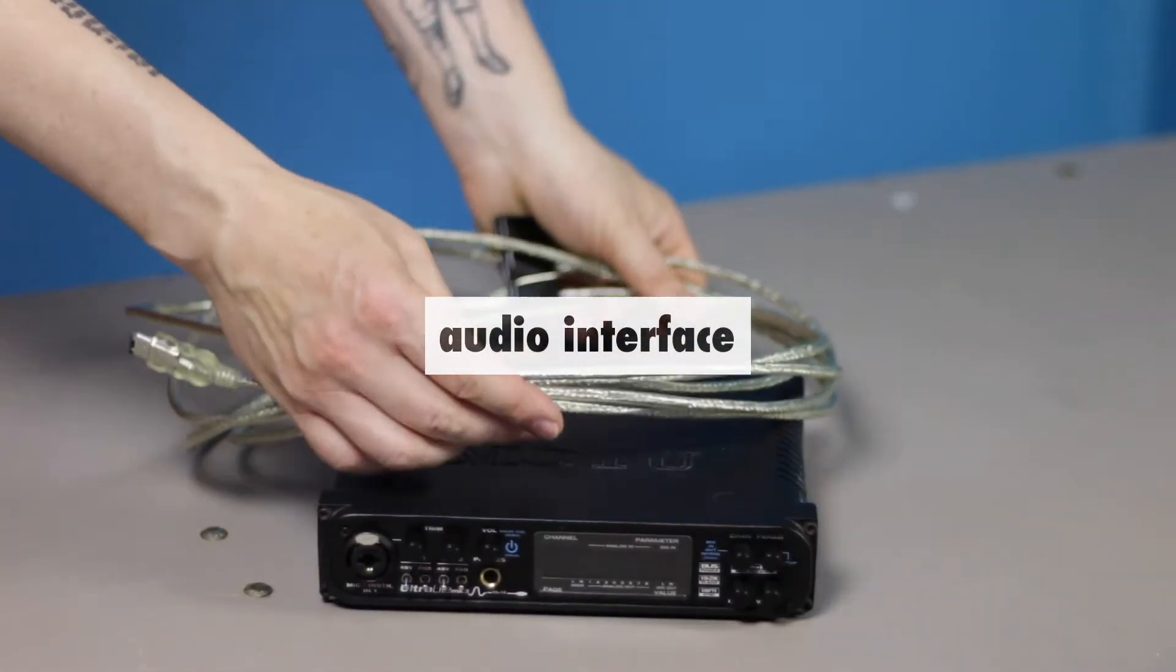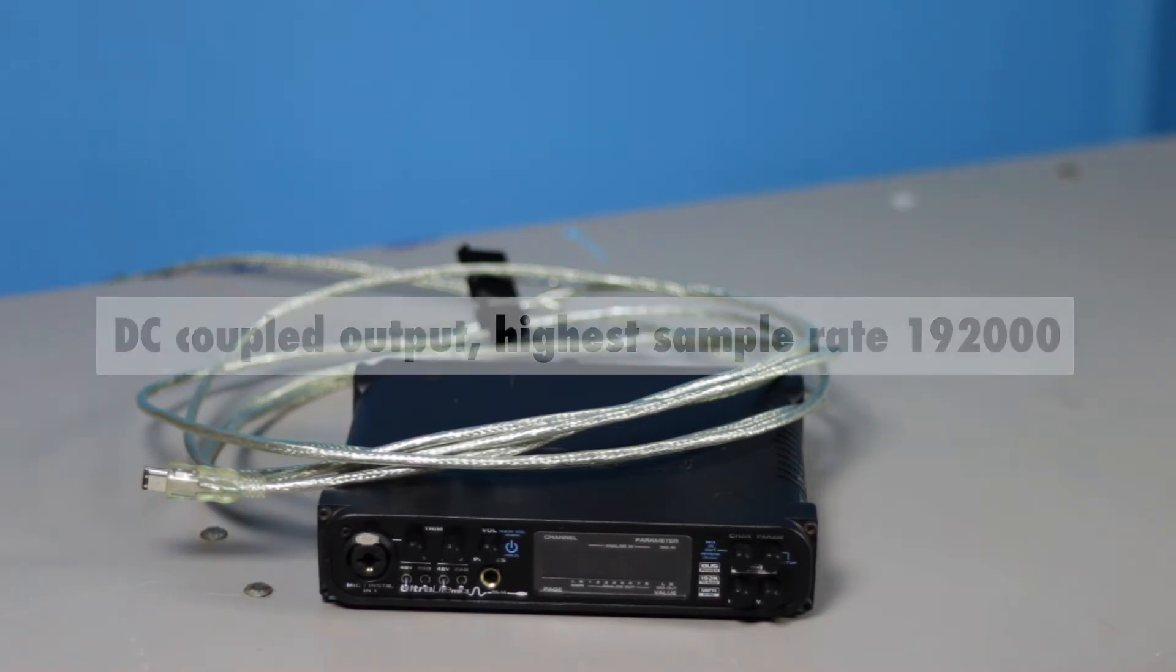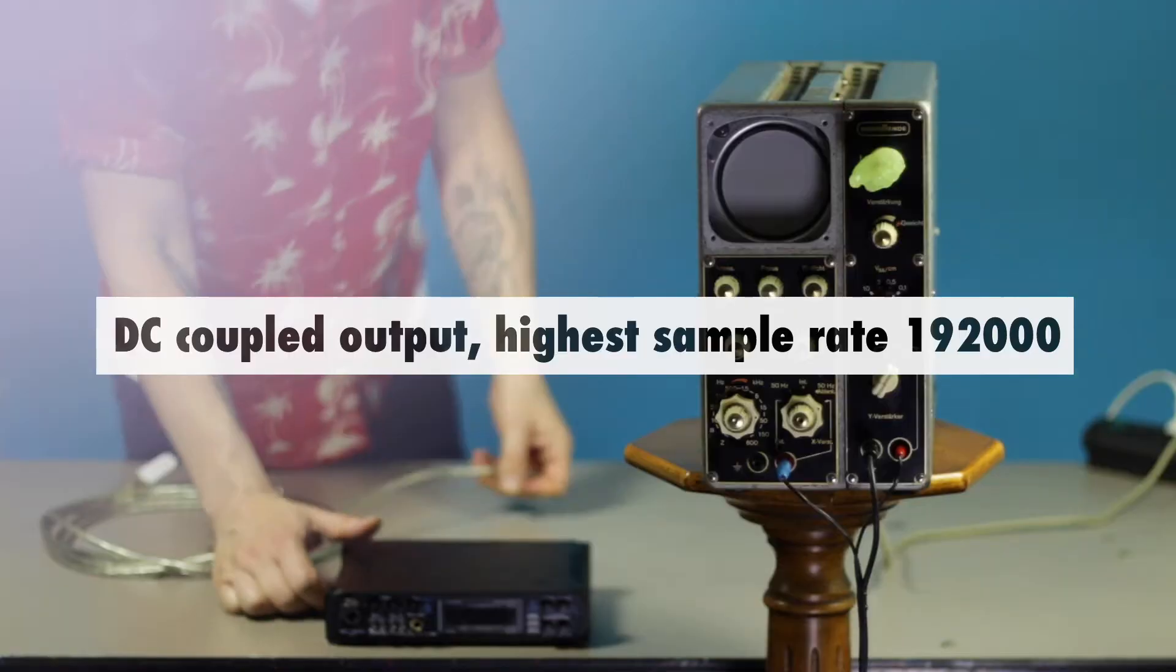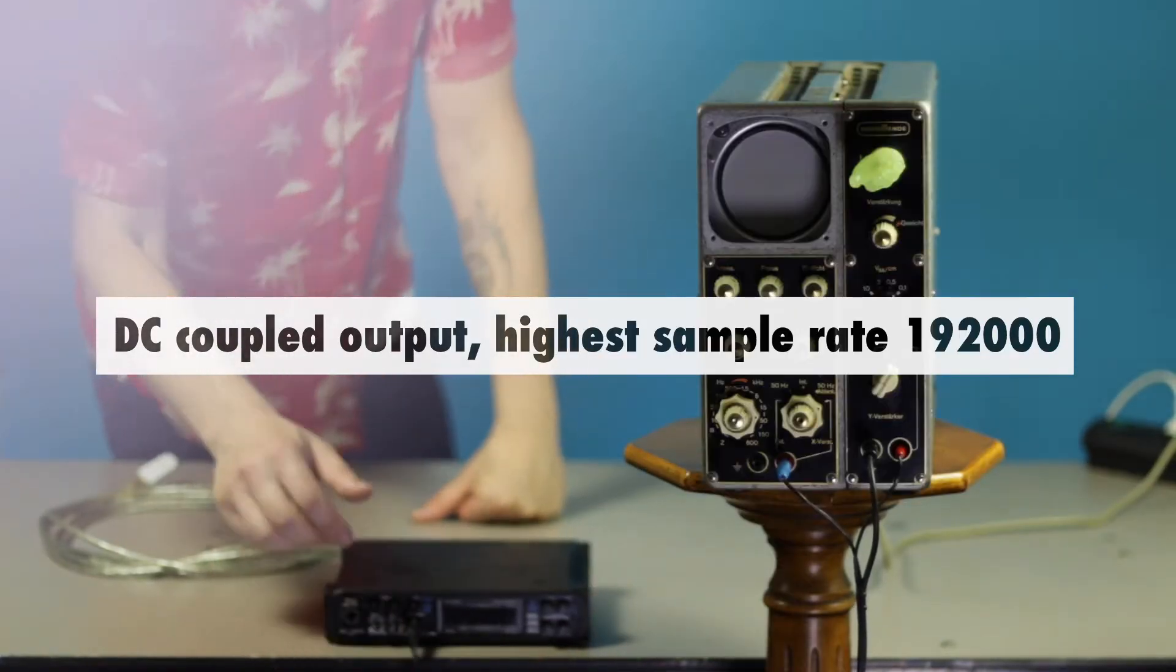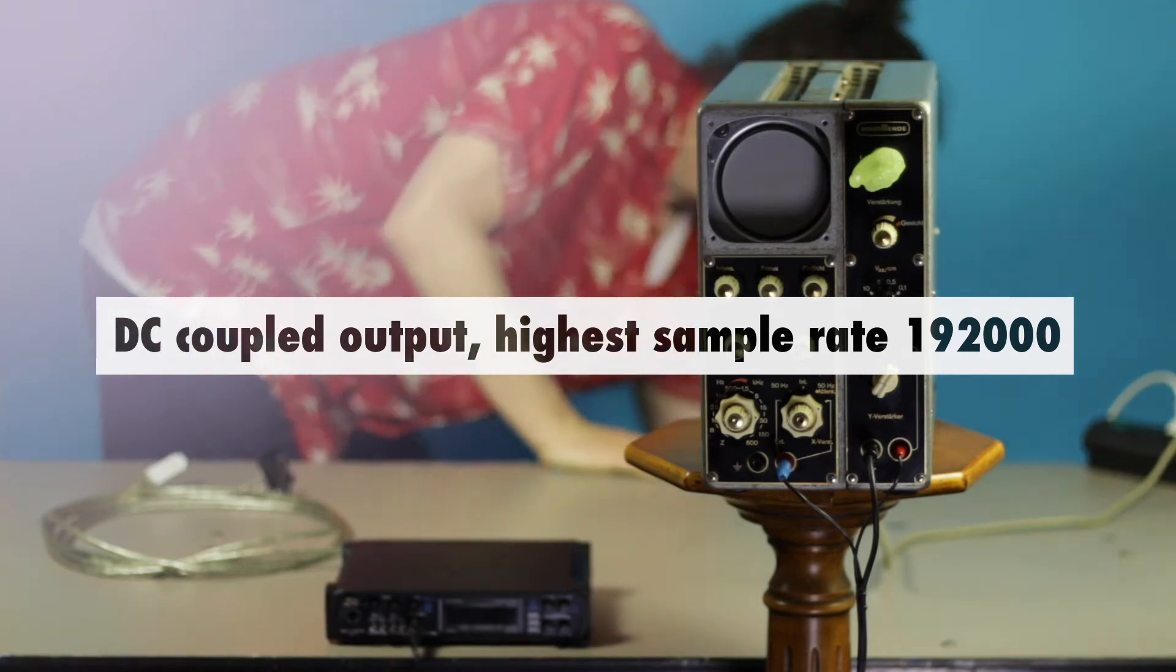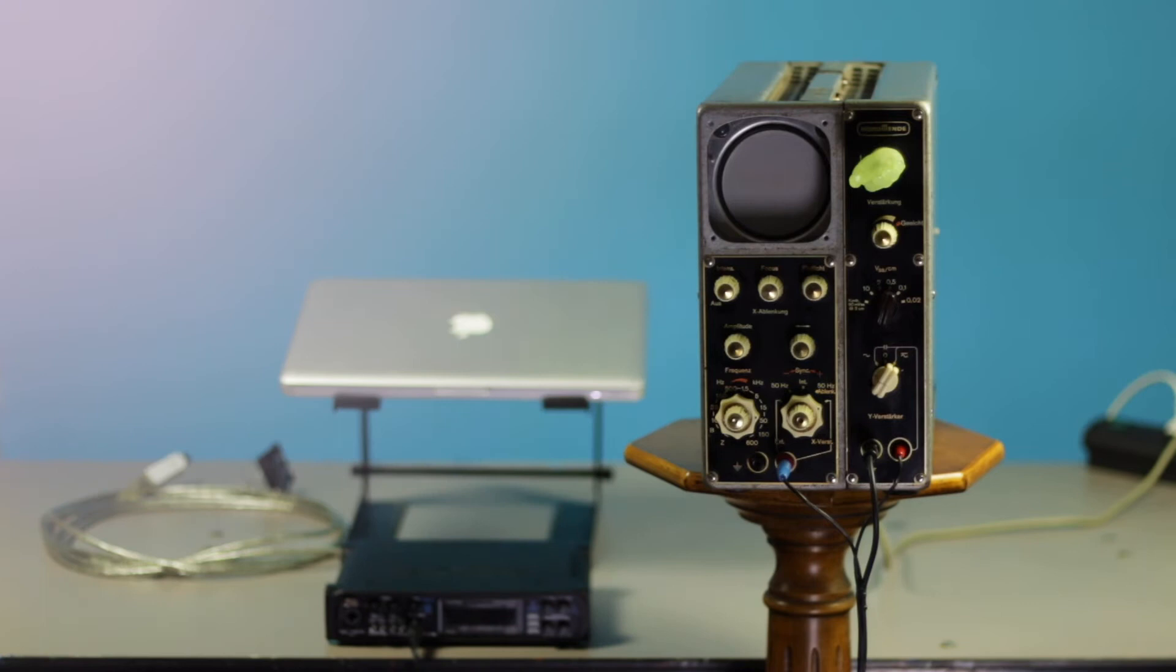The audio interface. You will need an audio interface with balanced DC coupled outputs and the highest sample rate you can have. The higher it is the better your image displays on the screen. I recommend a sample rate of 192,000. I work with RME8PRI and the Motu Ultralight MK3.